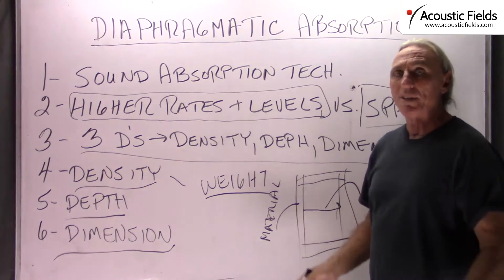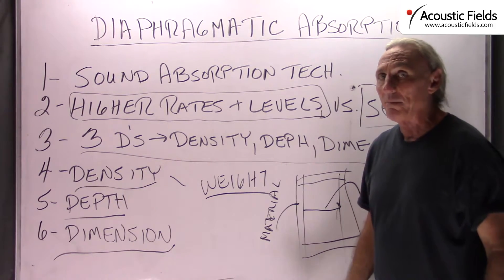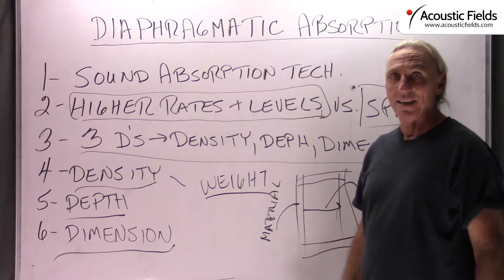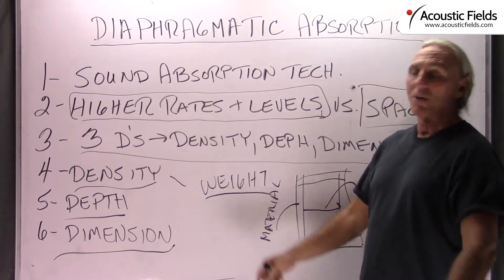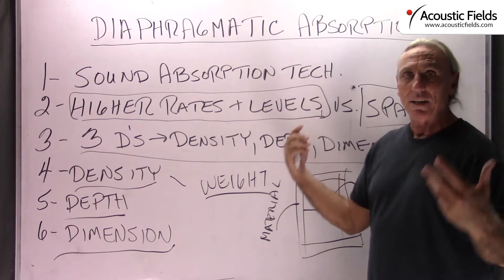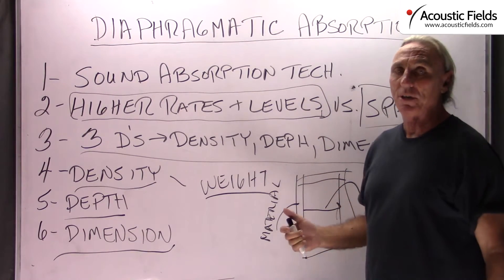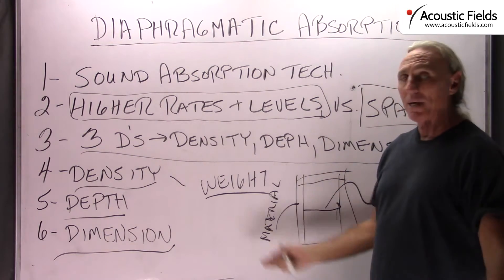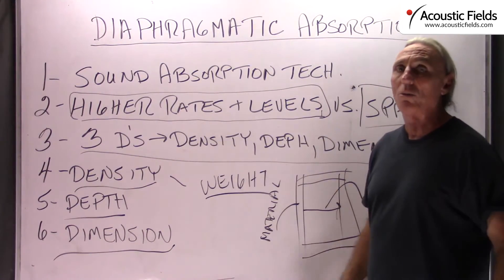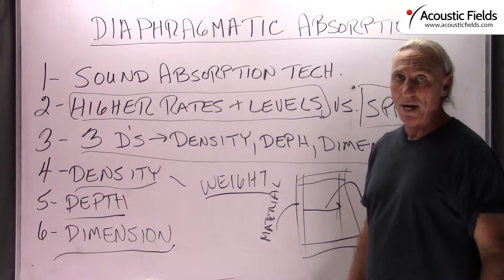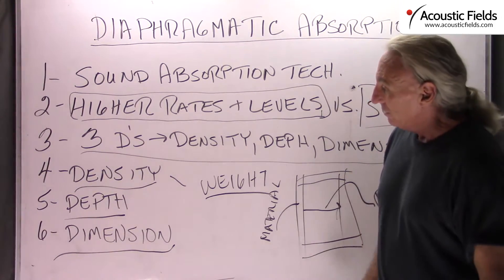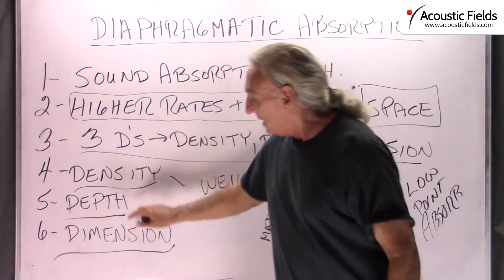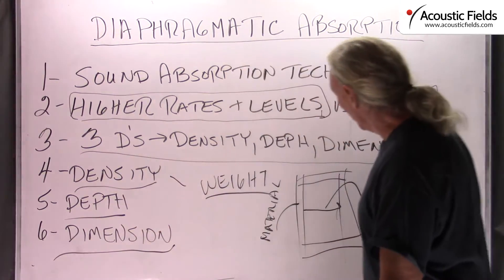If you're in a room that's 10 by 10 by 9, you're going to need a lot of surface area covered with low frequency absorption because basically the whole room is an acoustic mess. So: density, depth, and dimension.